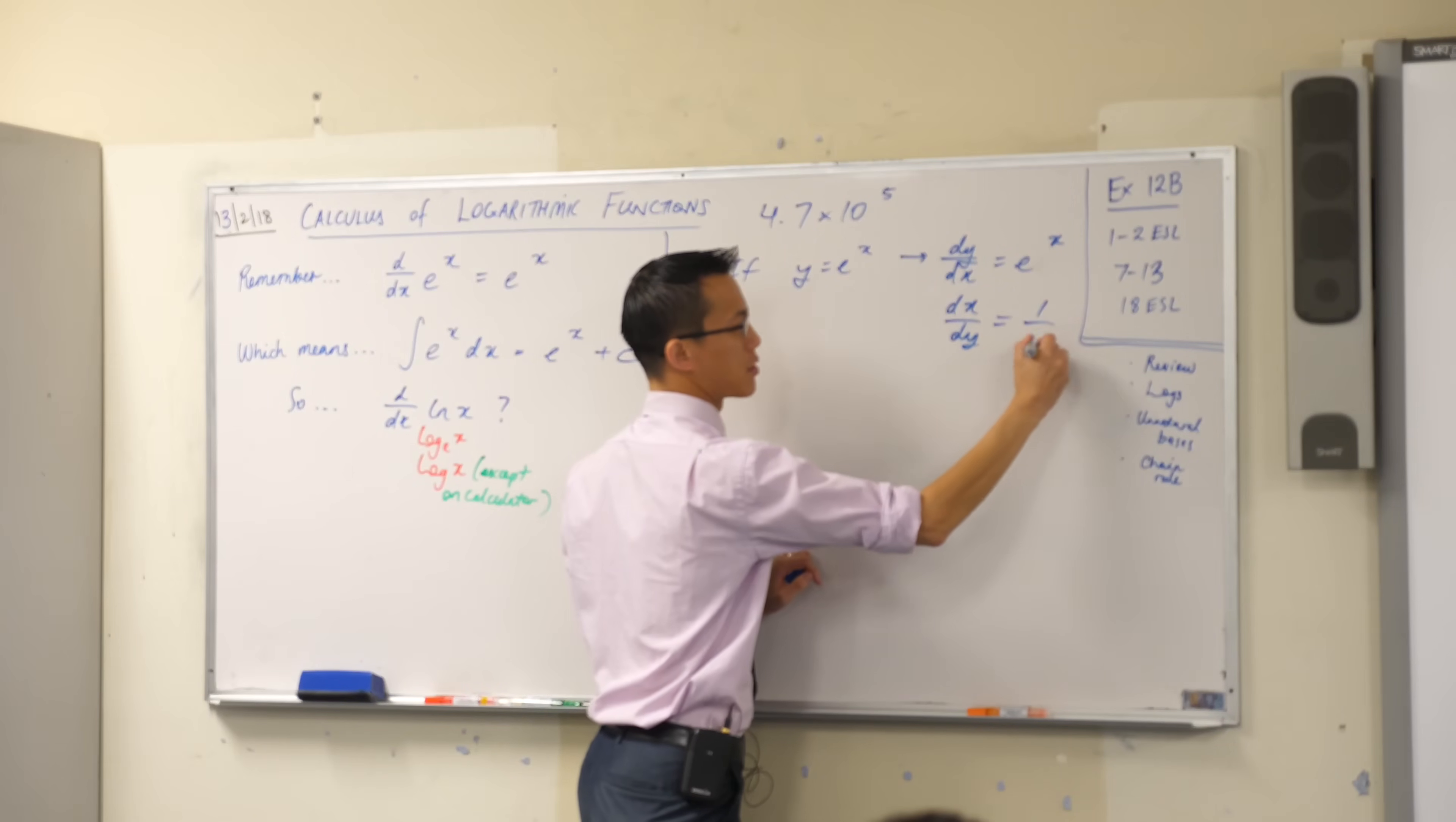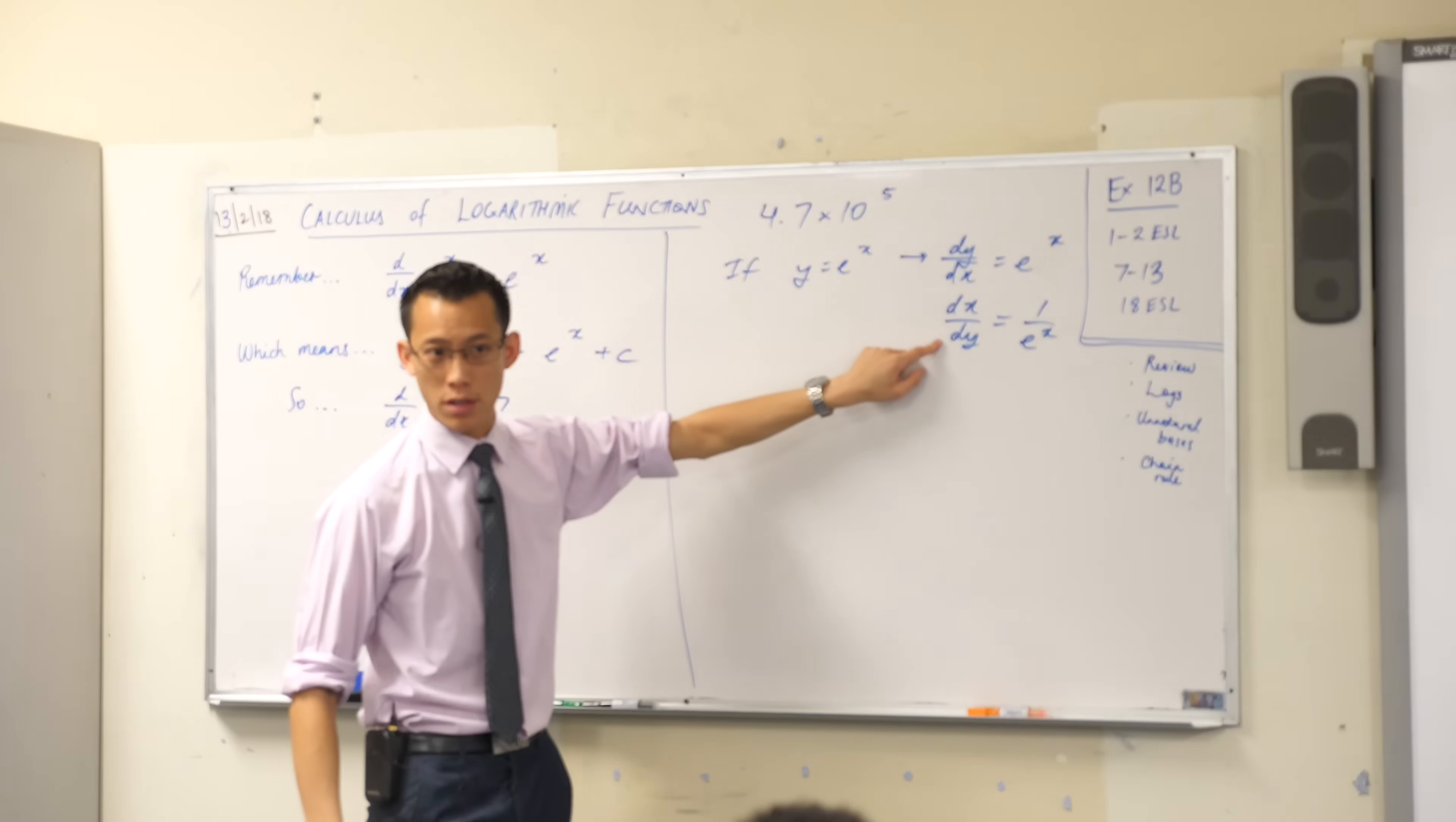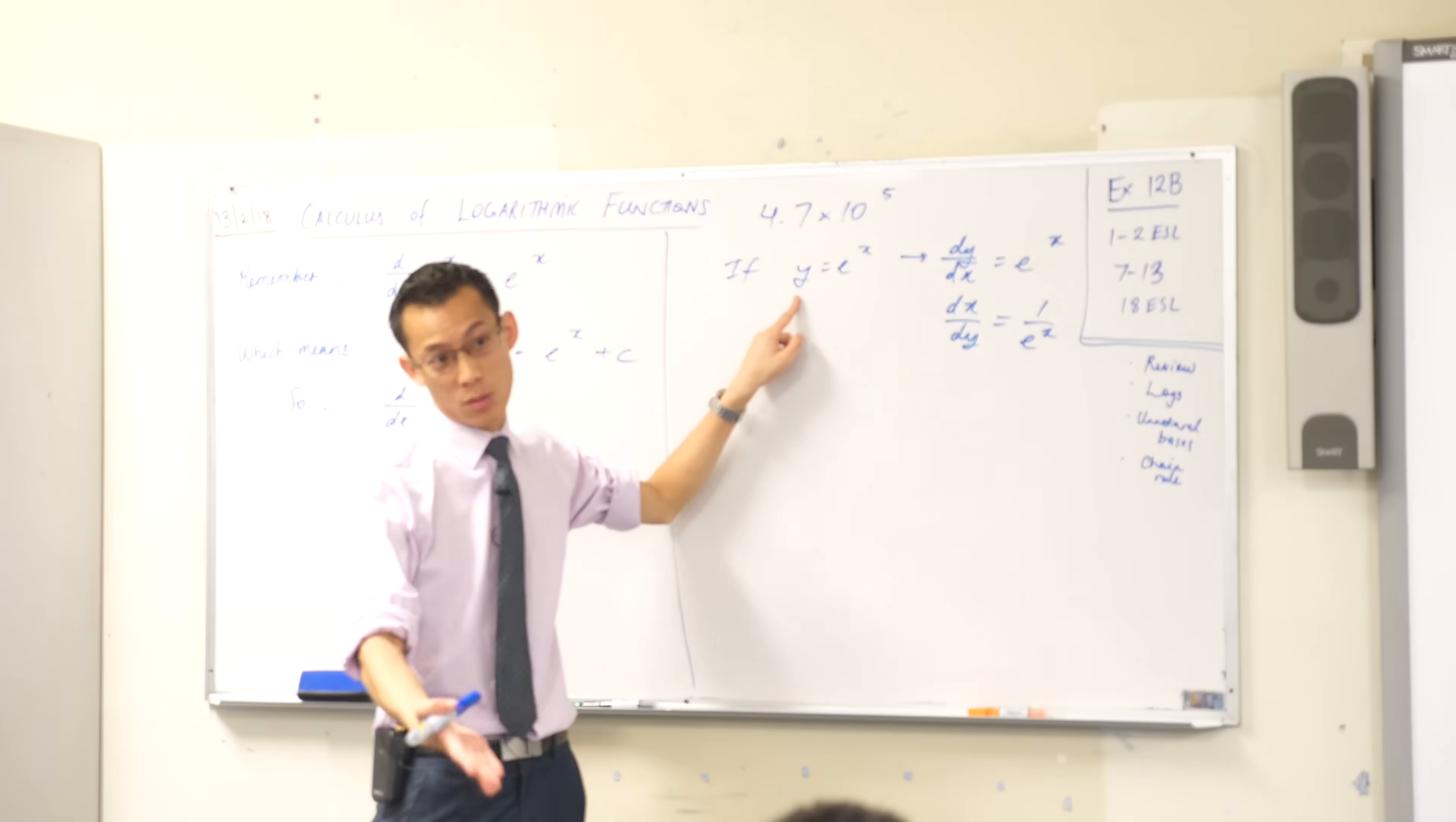Now why would I do this? I just want you to think for a moment. Remember we talked about the fact that exponentials and logs are just the same object looked at from different points of view. Now I want you to compare this derivative with this derivative. What does this mean? This is rise over run, yeah? Change in y compared to change in x. So this is dy over dx. You're differentiating y with respect to x. That's what that means.